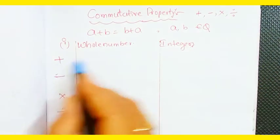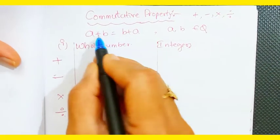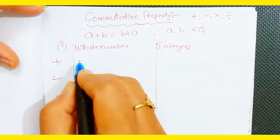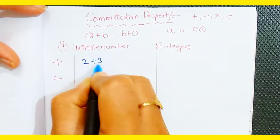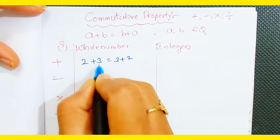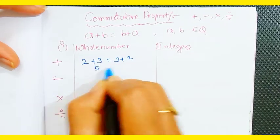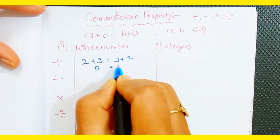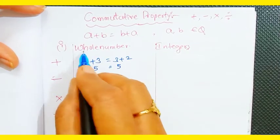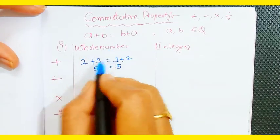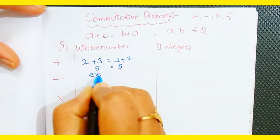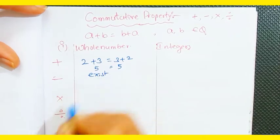For whole numbers under addition: a + b = b + a. Suppose 2 + 3 = 3 + 2. Both equal 5, so the commutative property exists for whole numbers under addition.